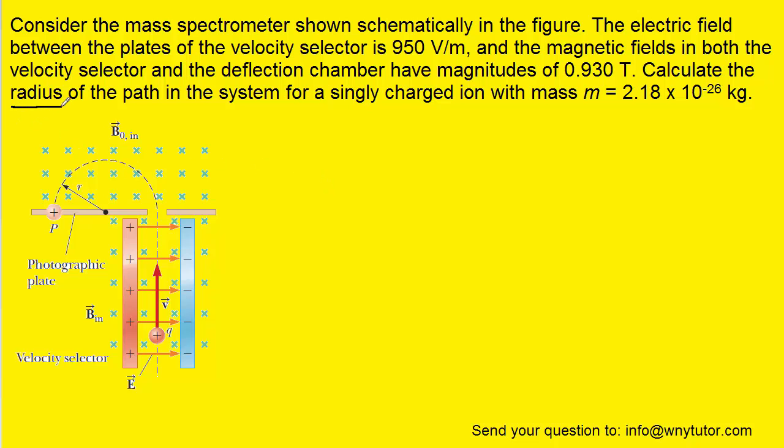Now, since this question is asking us to calculate the radius of a charged particle that's moving through the magnetic field, most of us would think of the following equation, as it is one of the key equations presented in the chapter. We have the mass of the particle, the velocity of the particle, the charge, and the magnetic field.